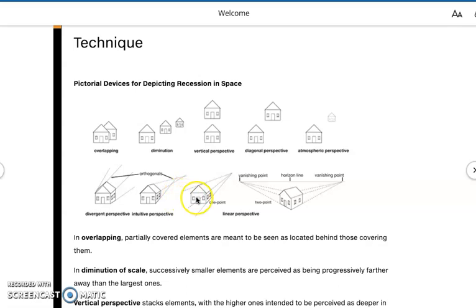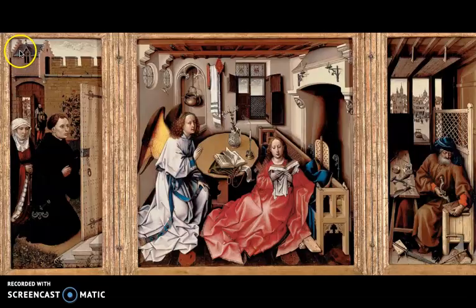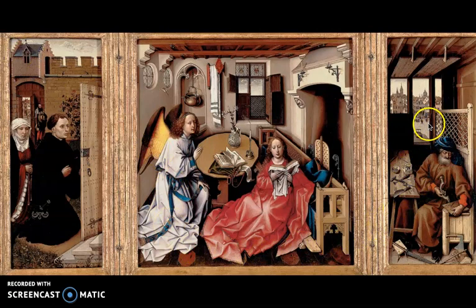But they tended to rely on what we call intuitive perspective because Brunelleschi hadn't come around yet. Working intuitively, an artist like the Master of Flammal can make very convincing senses of recession back in space. However, there are certain elements that are not 100% convincing because the angles at which things converge are a little bit too extreme.